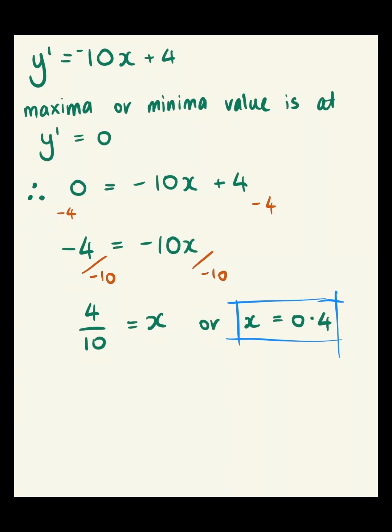Now the last thing we need to do with this value is substitute it back into our original equation to get the coordinate. We want to find the function of y when x equals 0.4. When we put that into our calculation, that's negative 5 multiplied by 0.4 squared plus 4 multiplied by 0.4 minus 3.